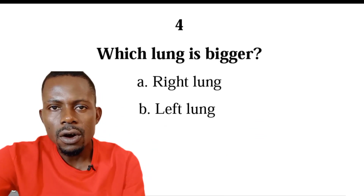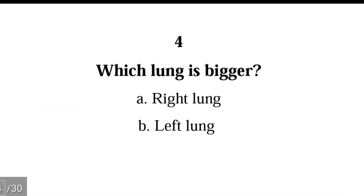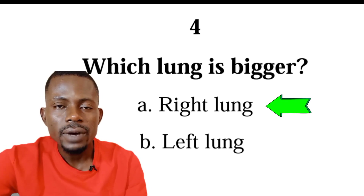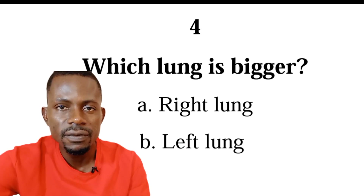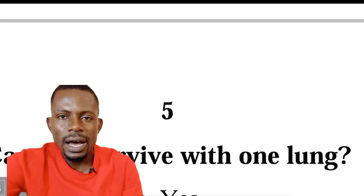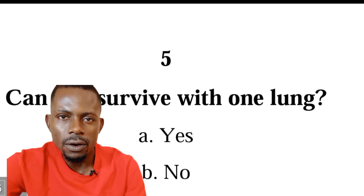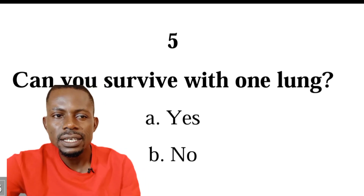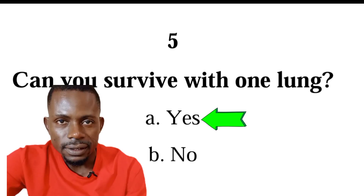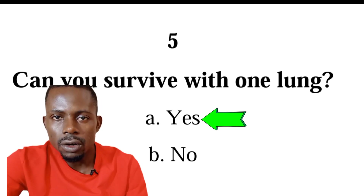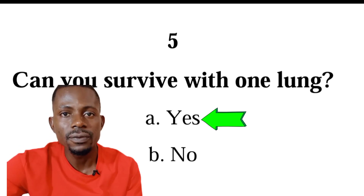Number four: which lung is bigger — the right lung or the left lung? The correct answer is A, the right lung. The right lung is bigger, wider, and even heavier than the left lung. Number five: can you survive with one lung? The correct answer is yes. Just like the kidneys, you can actually survive with one lung.